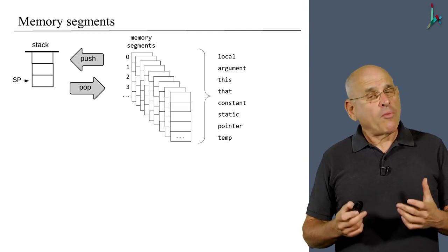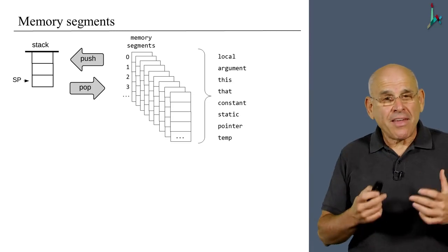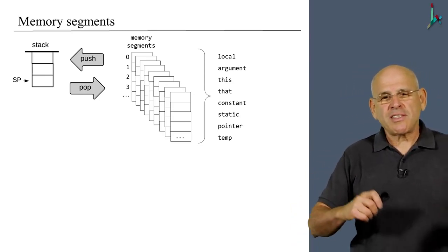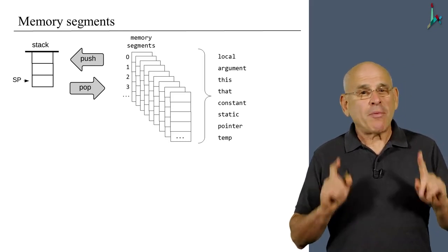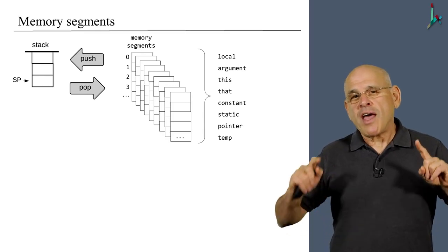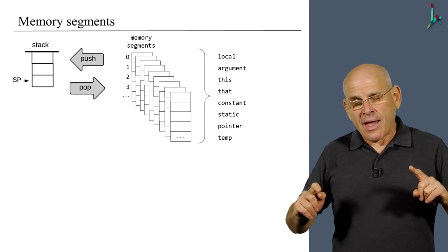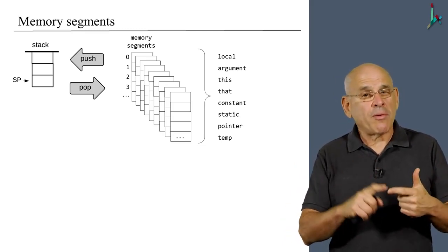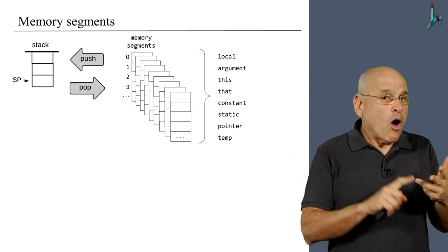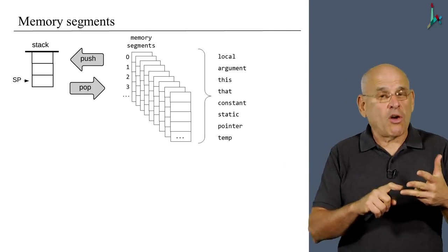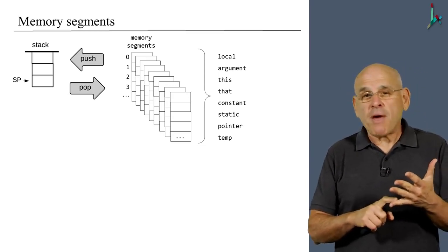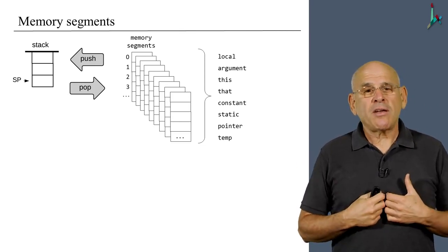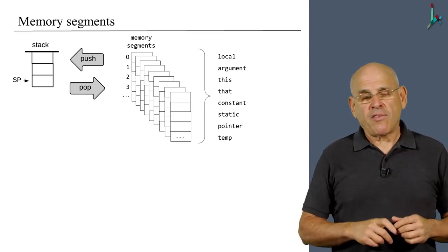To make life interesting, we actually have not four but eight virtual memory segments. Why do we need so many? With names like local, argument, this, that, constant, static, pointer, and temp — let us not forget where we are coming from: the world of a high-level object-oriented language. There are static variables, local variables, argument variables, the current object a method is processing, arrays, and so on. There's a lot of semantics going on, and in our virtual machine we can handle all of it using these eight virtual segments. The good news is that all these segments behave exactly the same way within the VM abstraction.